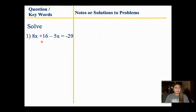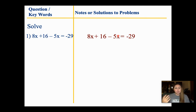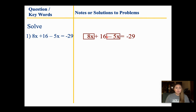Here's question one: 8x plus 16 minus 5x equals negative 29. The first thing we're going to do is think about PEMDAS. Do we need to distribute anything? I don't see any parentheses, so we don't have to distribute. However, I need to pay attention to whether we have any like terms. I look around on each side and I see there's an 8x — is there another x? There is, and I need to take that subtraction symbol with me, making it a negative 5 versus a positive 5.